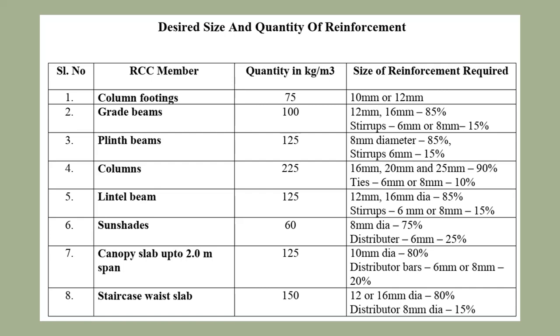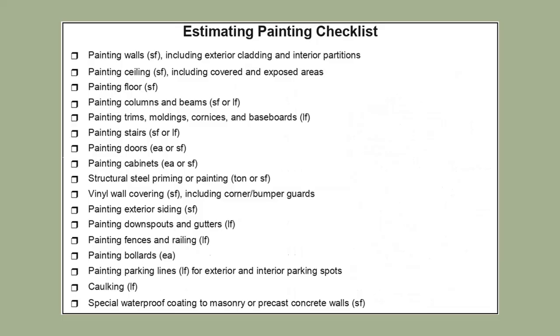Staircase waist slab requires 150 kg per cubic meter. Now we move to the estimating painting checklist.